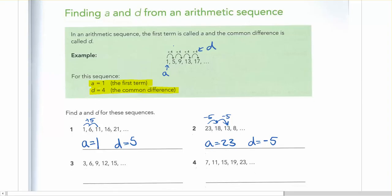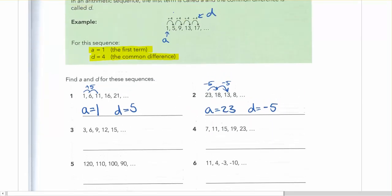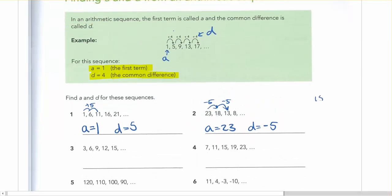And if you're uncertain on any of these, or have trouble subtracting or figuring out what it is, just use your calculator. Here I would have done 18 minus 23.